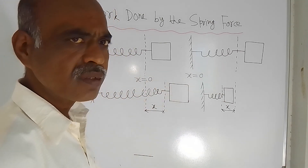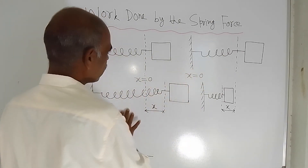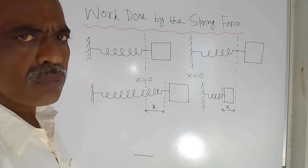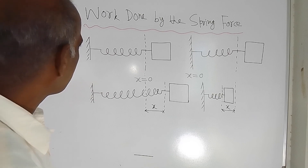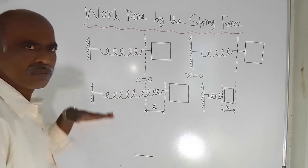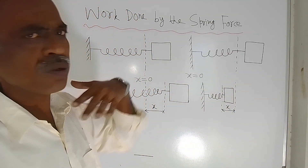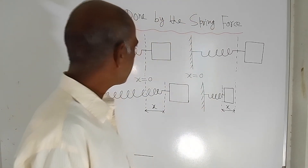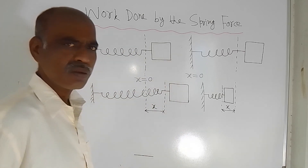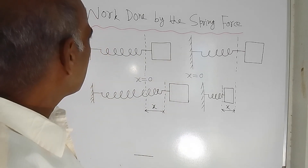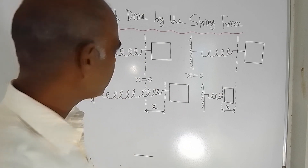I have already drawn the sketches. There are a total of 4 sketches — sketch number 1, 2, 3 and 4. Here in the first sketch, you can see that there is a spring kept in a horizontal position. Suppose a spring is kept on the surface of a table, and at the end of the spring there is one block having some weight. I have drawn one dotted line here — this vertical line is a dotted line.